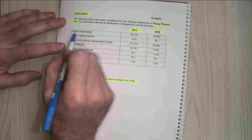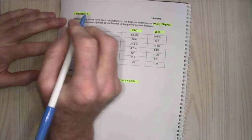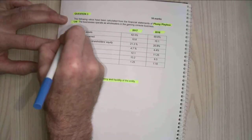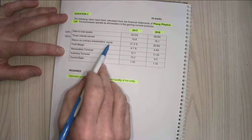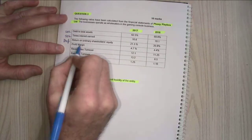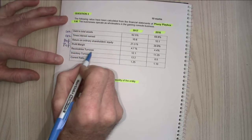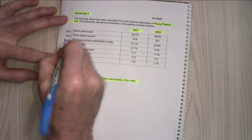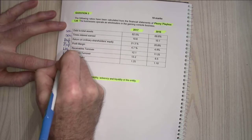If I look at my debt to total assets, that's a solvency ratio. If I look at my times interest, that's also a solvency ratio. If I look at my return to ordinary shareholders equity, that's profitability. Profit margin is profitability. Receivables turnover is liquidity. Inventory turnover is liquidity and my current ratio is liquidity.